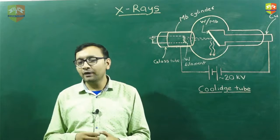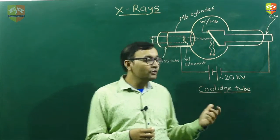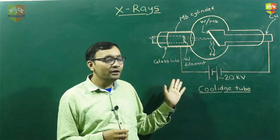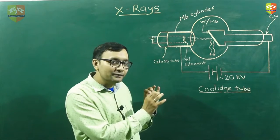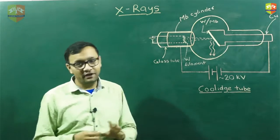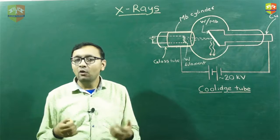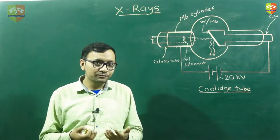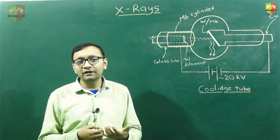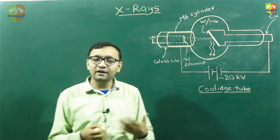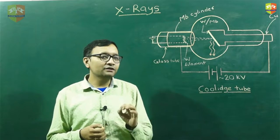Röntgen got a Nobel Prize for his discovery. It was Coolidge who was the first to devise a formal experiment to create X-rays. In this topic, we are going to learn how X-rays are produced, what are the formulas governing their production, and what is the wavelength and related quantities.